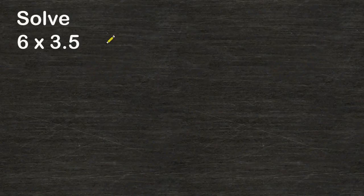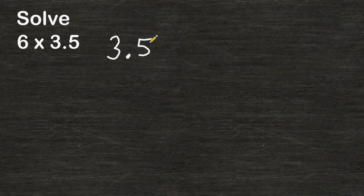The first thing we can do is write the number that contains more digits at the top. So I'm going to start by writing 3 and 5 tenths, and right underneath that, I'm going to write times 6.